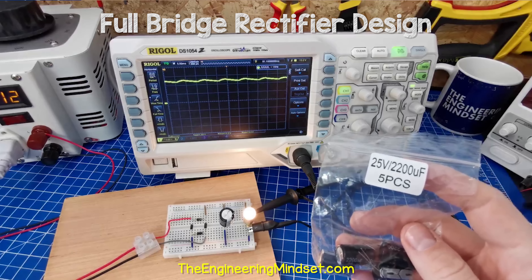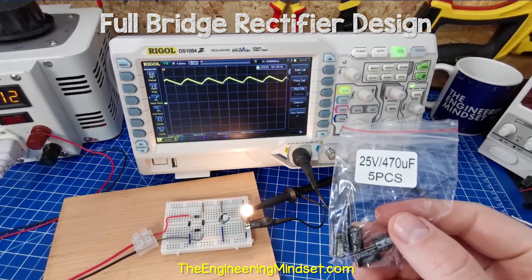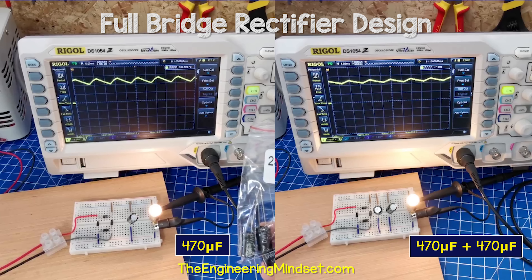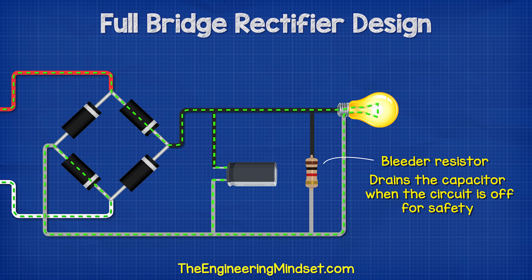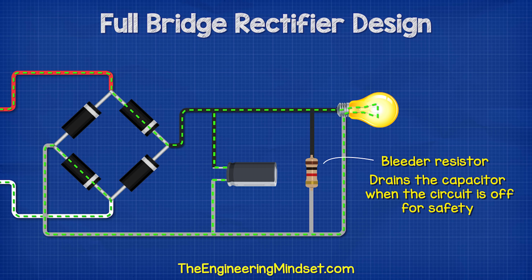This would be fine to use for many electronic circuits. We could use multiple capacitors also. Here we have a 470 microfarad capacitor, which has made some difference. But if I use two capacitors in parallel, we see the waveform is much more improved. When using a capacitor, we need to place a bleeder resistor across the output. This is a high value resistor which will drain the capacitor when the circuit is off, to keep us safe.